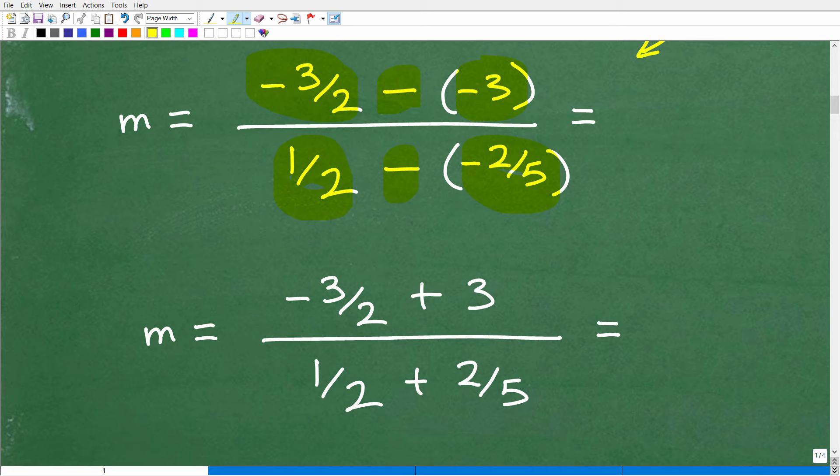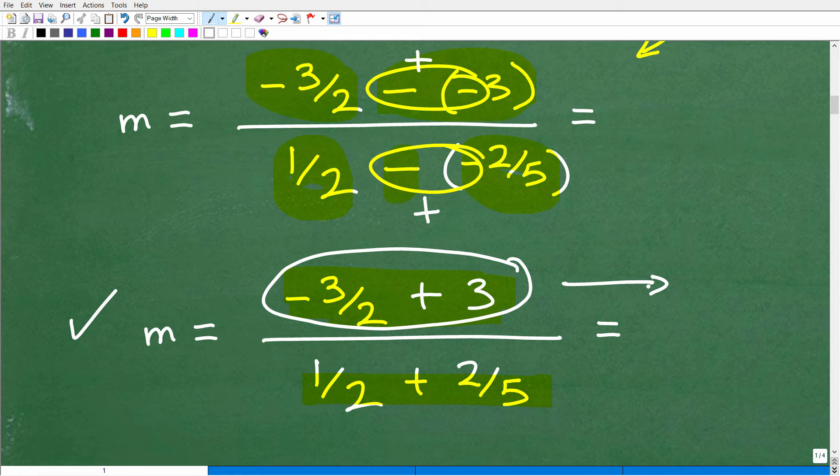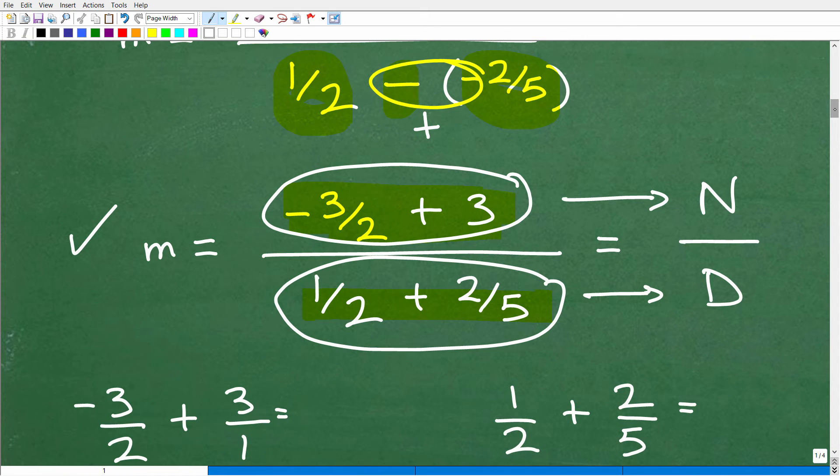So we have negative 3 halves minus a minus 3 is going to be right here. This is going to become a positive 3. So this is negative 3 halves plus 3. And then we have 1 half minus a negative 2 fifths. So this is going to become 1 half plus a 2 fifths. Remember, a negative of a negative is a positive. So both of these situations right here become an addition operator. All right, so now that's our next step. So what I need to do is figure out what this value is. I got one fraction problem. That's going to be my numerator. Then I got to figure out this, and that's going to be my denominator. So we're just going to have to take this one step at a time.